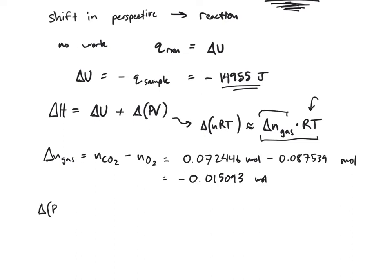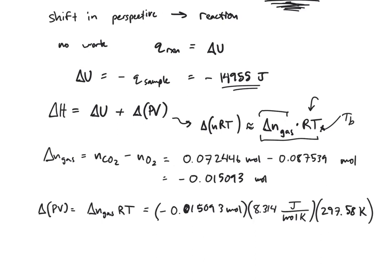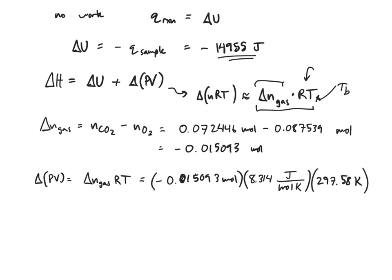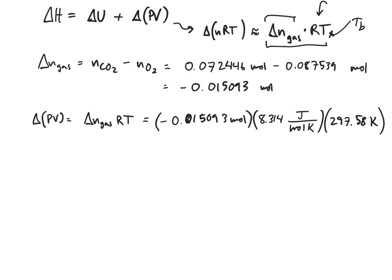That means my delta PV is equal to delta N_gas times R times T. That's negative 0.015093 moles times R—we have to use the R in units of joules per mole Kelvin—and then my temperature. For the temperature we're going to use T_B. My T_B was 297.58 Kelvin. Obviously you're going to have a different T_B, a different N of CO2, a different delta N_gas, a different N_O2, so you'll need to plug in all of your numbers and do the analysis for your system.